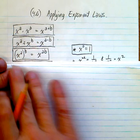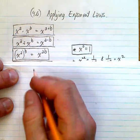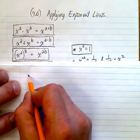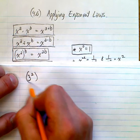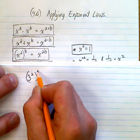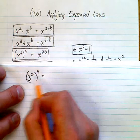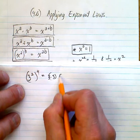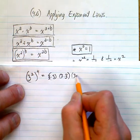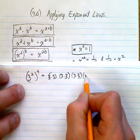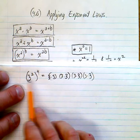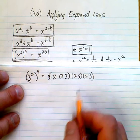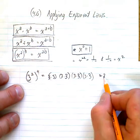For the power to a power law: if I have 3 to the power of 2, all to the power of 4, that means I've got 3 times 3, four times over - I've got four 3-squareds, which gives me 8 total. So you multiply those exponents and it's 3 to the power of 8.